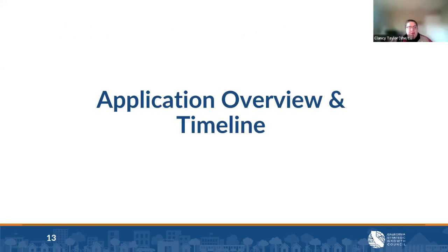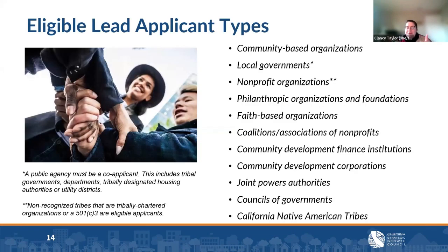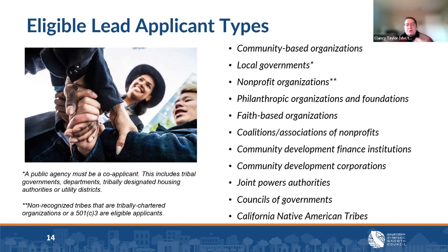Application overview and timeline — you're already ahead of the game by being here. For eligible lead applicant types, common ones in the rural and unincorporated space include local governments such as the county for an unincorporated area, community-based organizations, non-profits, CDFIs, joint powers authorities, governmental authorities, and California or other Native American tribes. The lead applicant will have to be one of these types of organizations.